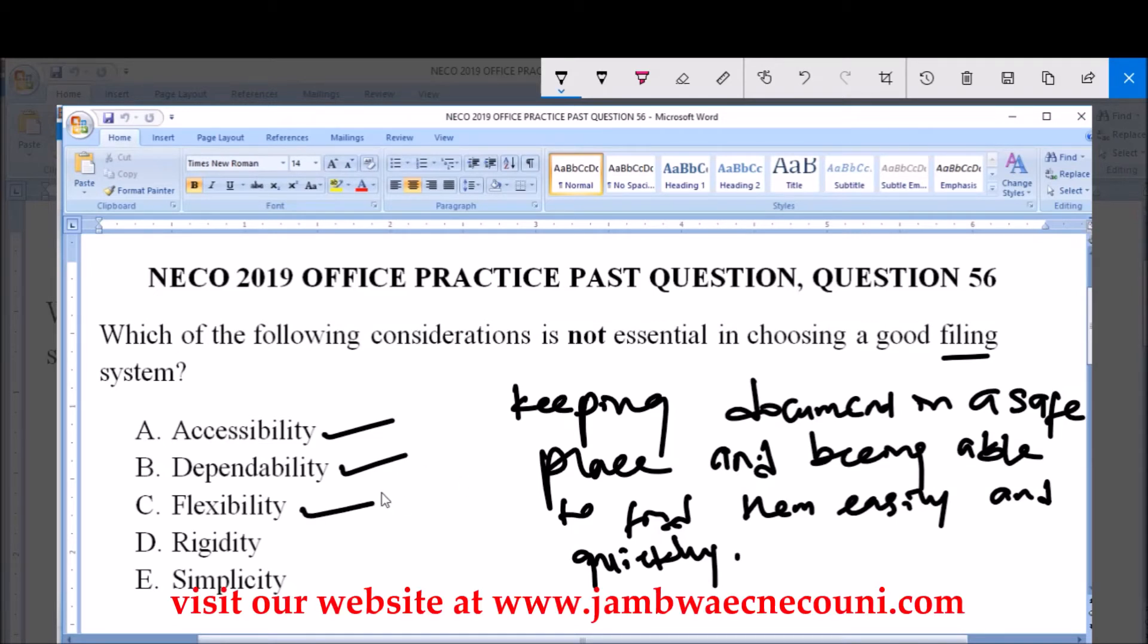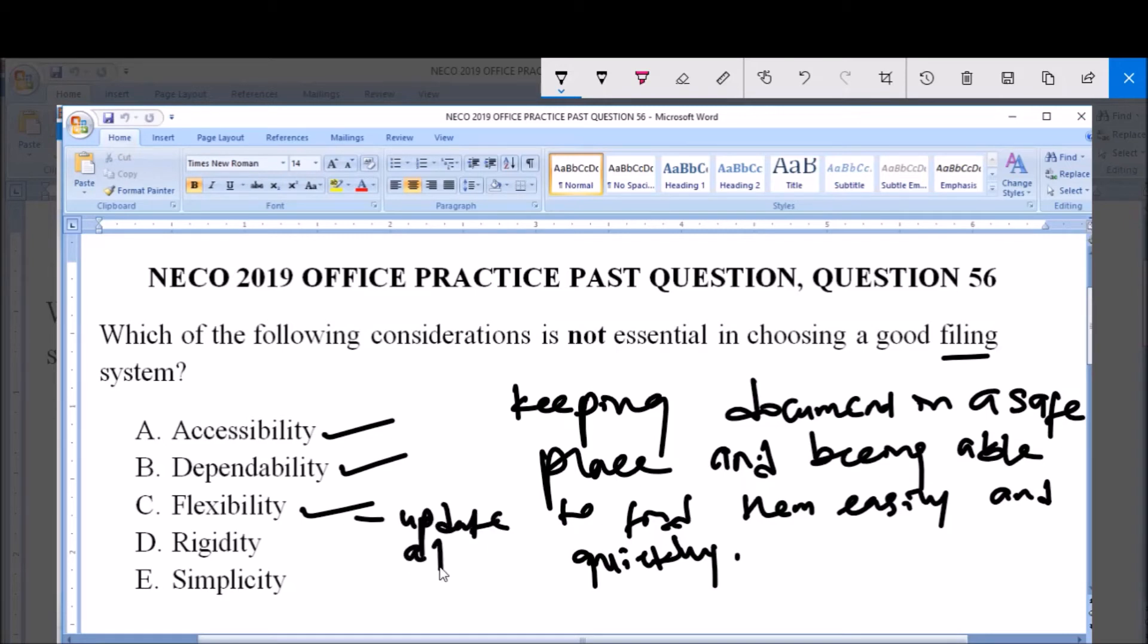C. Flexibility. Flexibility is also a consideration because a good filing system is such that allows updates, addition or removal of records.